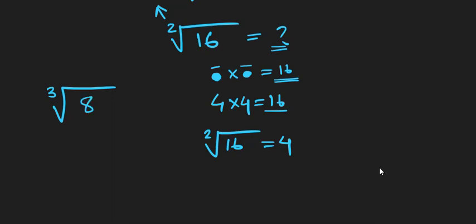Now if I write the third root of 8, you have to find out the result. The question is how many times we have to multiply a certain number to get the result of 8. We know that if we multiply 2 three times we will get 8.